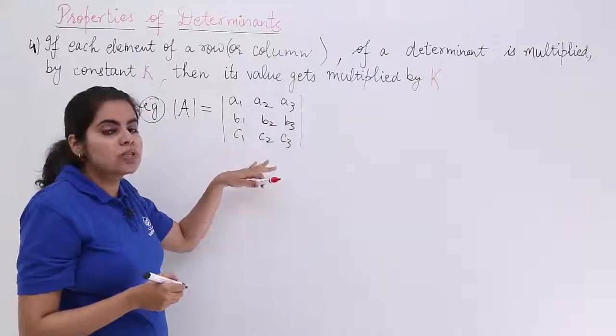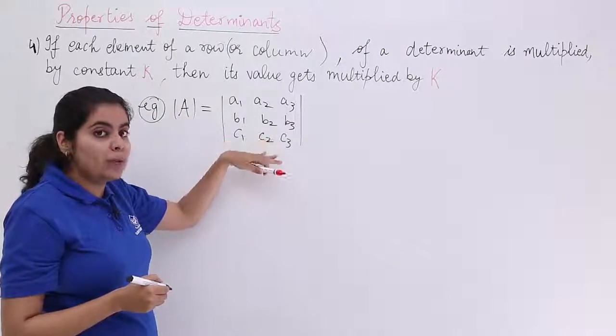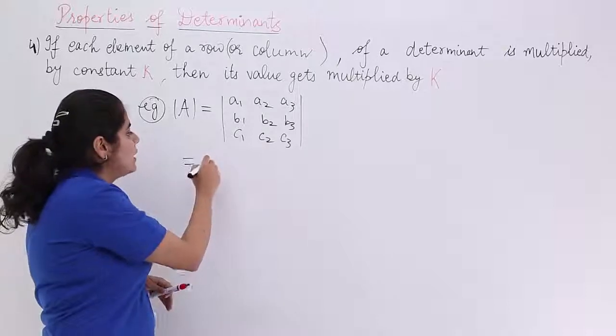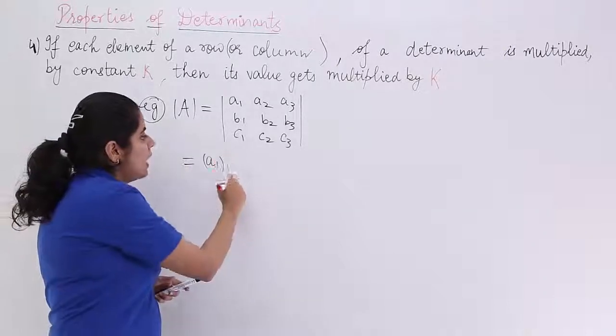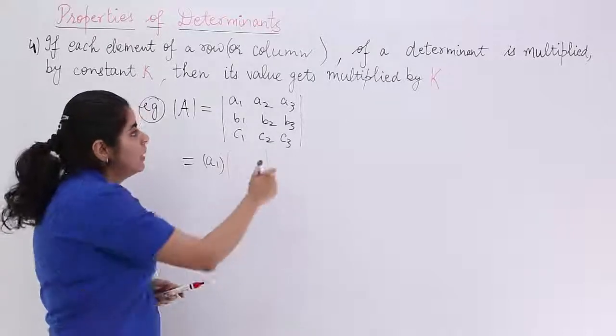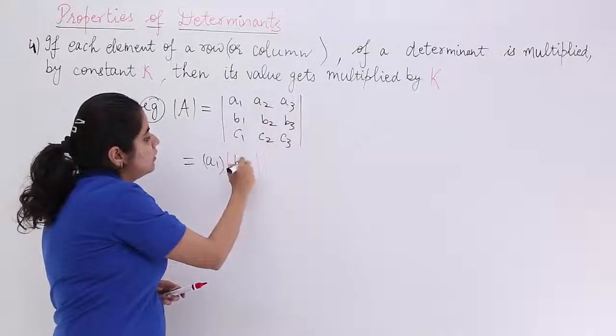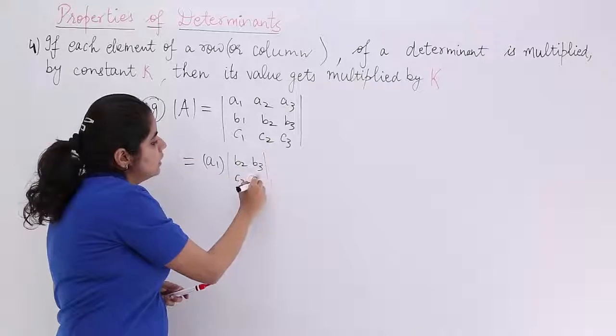Now, you have already seen in two videos based on properties only how to expand it. Let's start by expanding along row 1. So, it is A1 and inside what you have is a sub-determinant B2, B3, C2, C3.